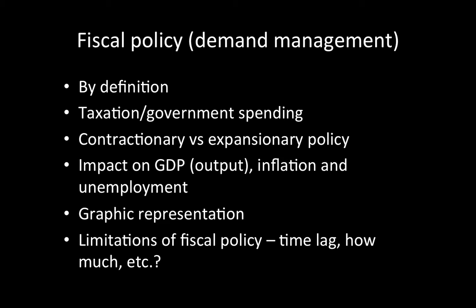When would they use it? Why would they use it? What would be the result? That brings us to the impact on GDP — essentially the same as output — whether that goes up or down, inflation and the price level rising or falling, and unemployment increasing or decreasing. Understand that contractionary and expansionary fiscal policy have different impacts on these three factors. Also know what it looks like on a graph and be able to determine when the economy is in short-run or long-run equilibrium.